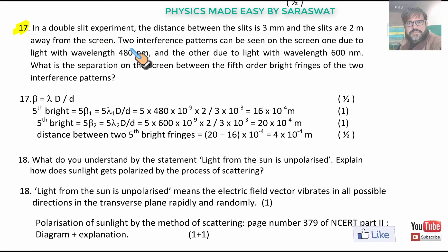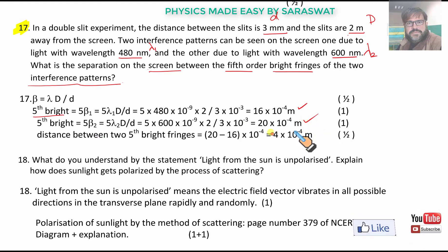Question 17. In a double slit experiment, the distance between the slits and the slits are 2 meter away. Two interference patterns can be seen on the screen, one due to the light of wavelength λ₁, and the other due to light of wavelength λ₂. What is the separation on the screen between the fifth order bright fringes of the two interference patterns? The fifth bright fringes is 5Dλ/d. So we subtract both to get the difference.